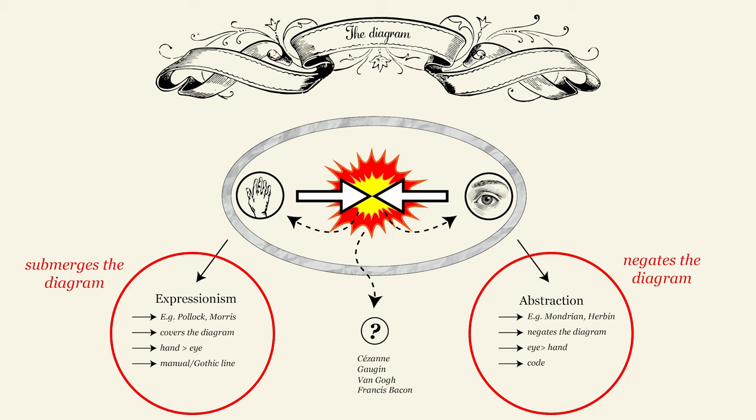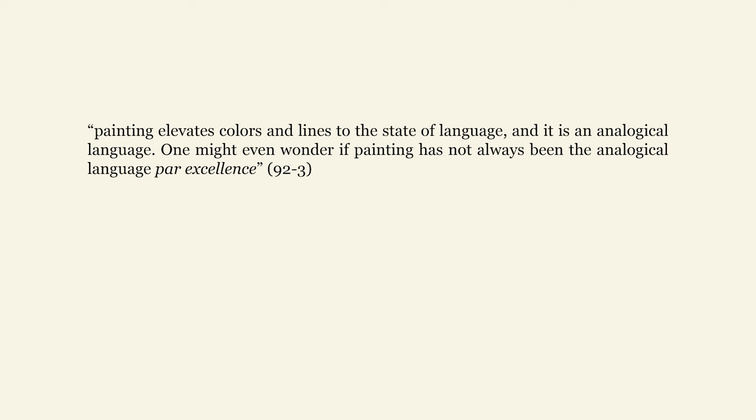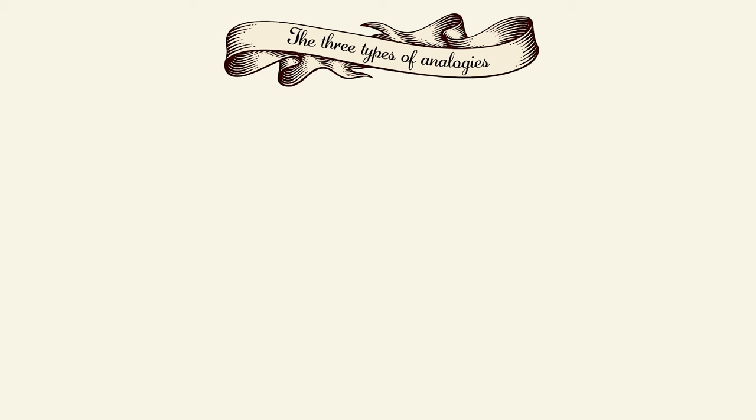We've seen that abstraction replaces the diagram with the digital code, while pure movement extends to the whole surface. So perhaps we may infer something new about the nature of the diagram itself. Since that which opposes the diagram is digital, the diagram must be analogical. It's not a code, but something that has more to do with immediate resemblance. And yet, because the diagram can leap inside the realm of representation, it must be ordered like a language. As Deleuze says, painting elevates colors and lines to the state of language — an analogical language. One might even wonder if painting has not always been the analogical language par excellence. Deleuze distinguishes three types of analogies, depending on whether resemblance is the cause or the effect — the producer or the product of the image.